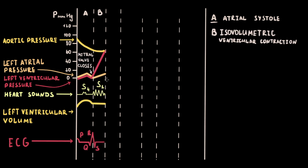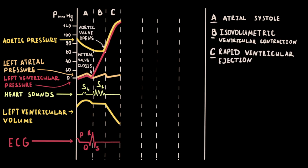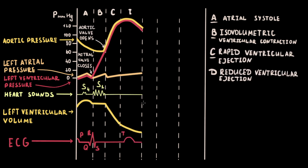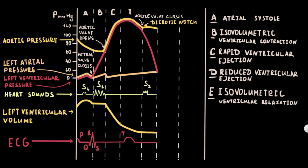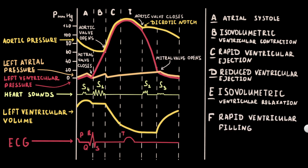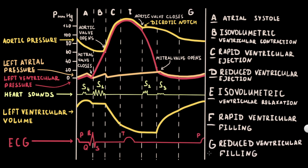The AV valves are closed at the beginning of isovolumetric ventricular contraction. The next phases are rapid and reduced ventricular ejection. After ventricular ejection, isovolumetric ventricular relaxation occurs. The AV valves then open in the rapid ventricular filling phase and remain open during the reduced ventricular filling phase. More details on the cardiac cycle can be found in another video — link will be in the description.